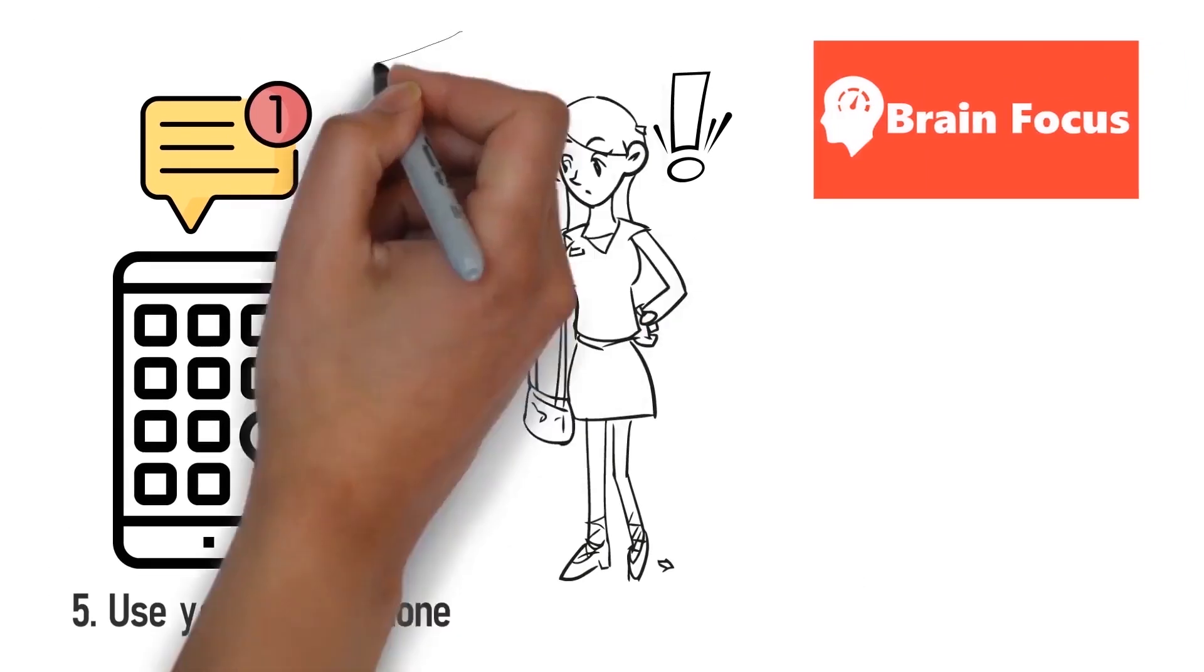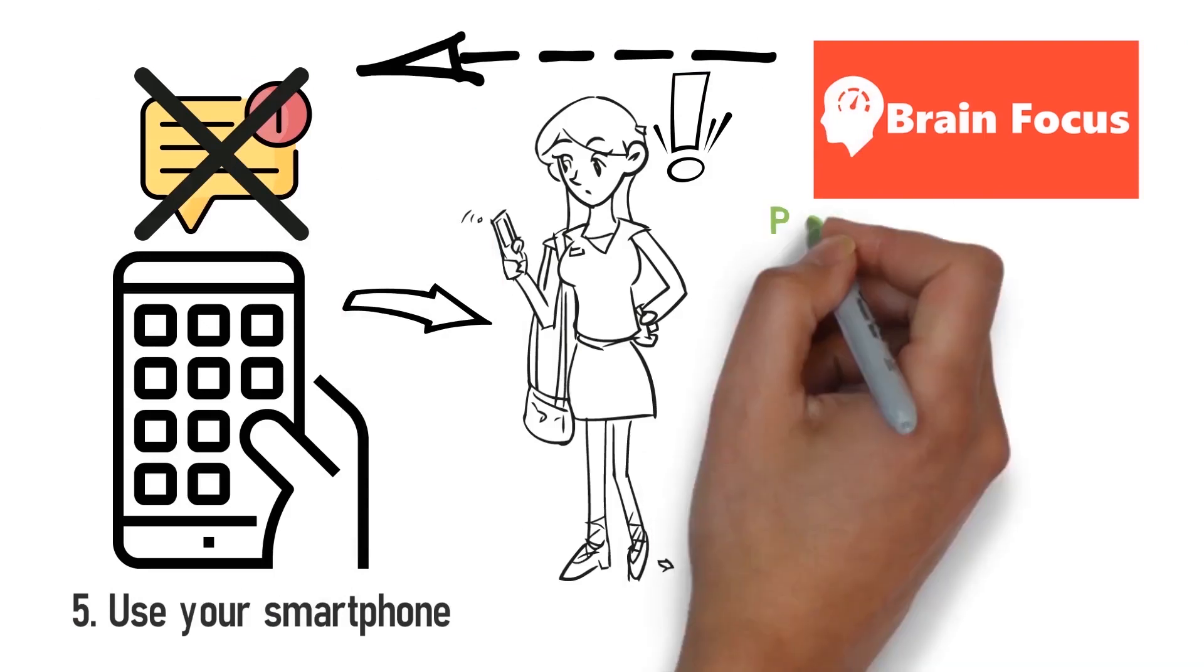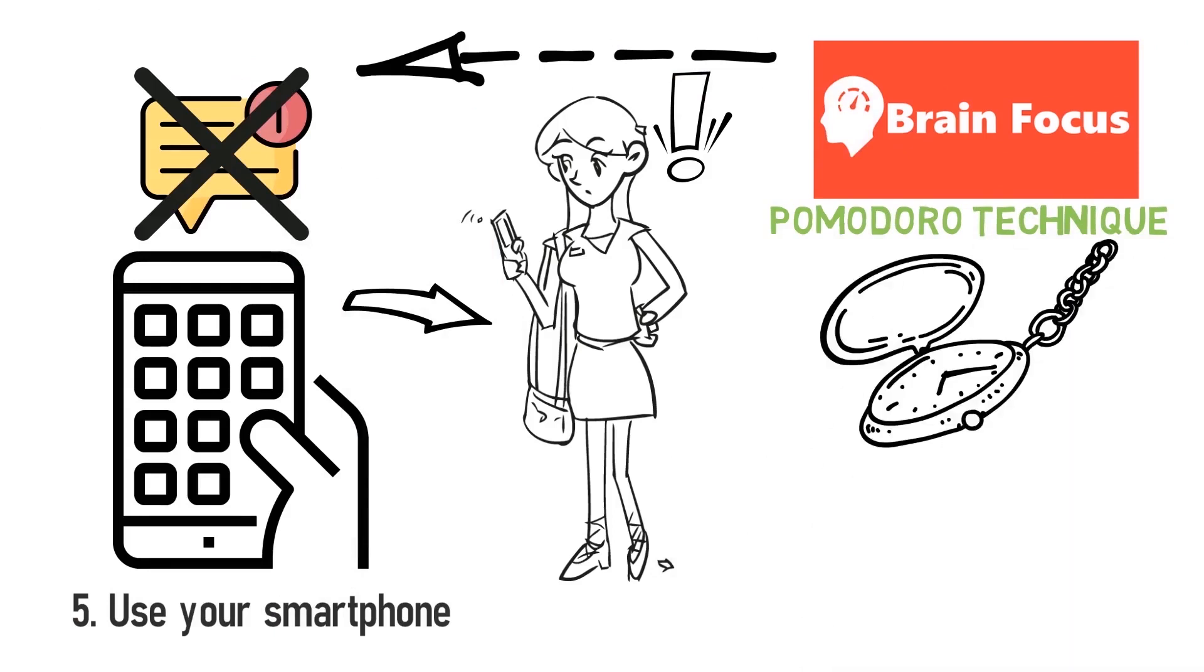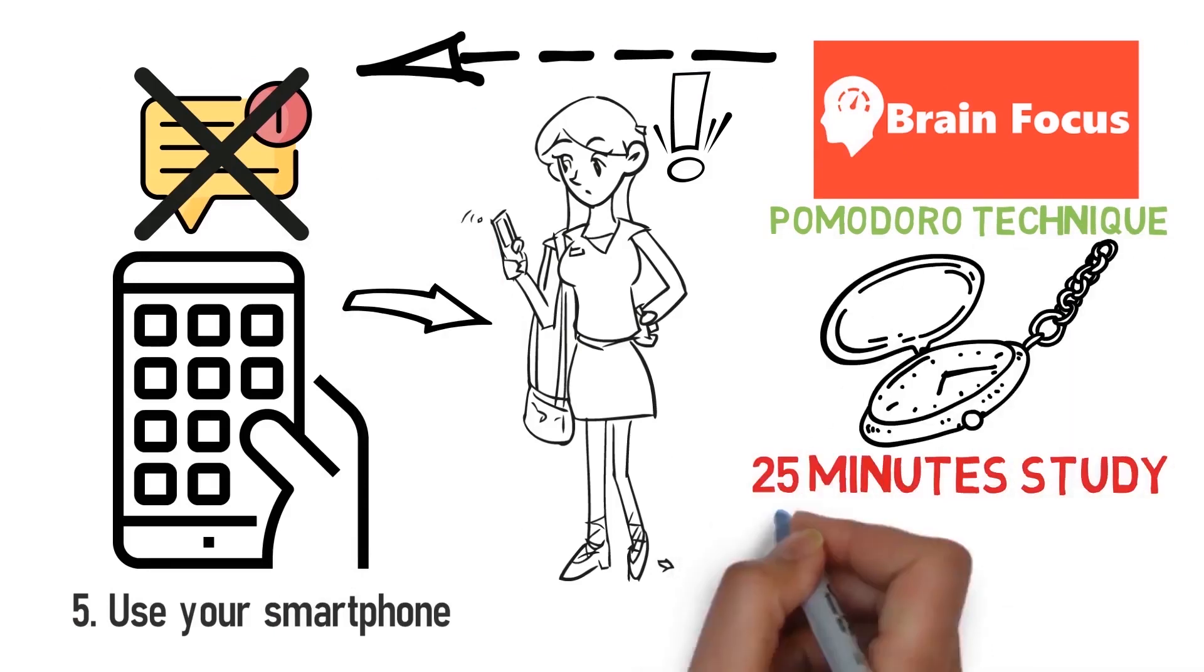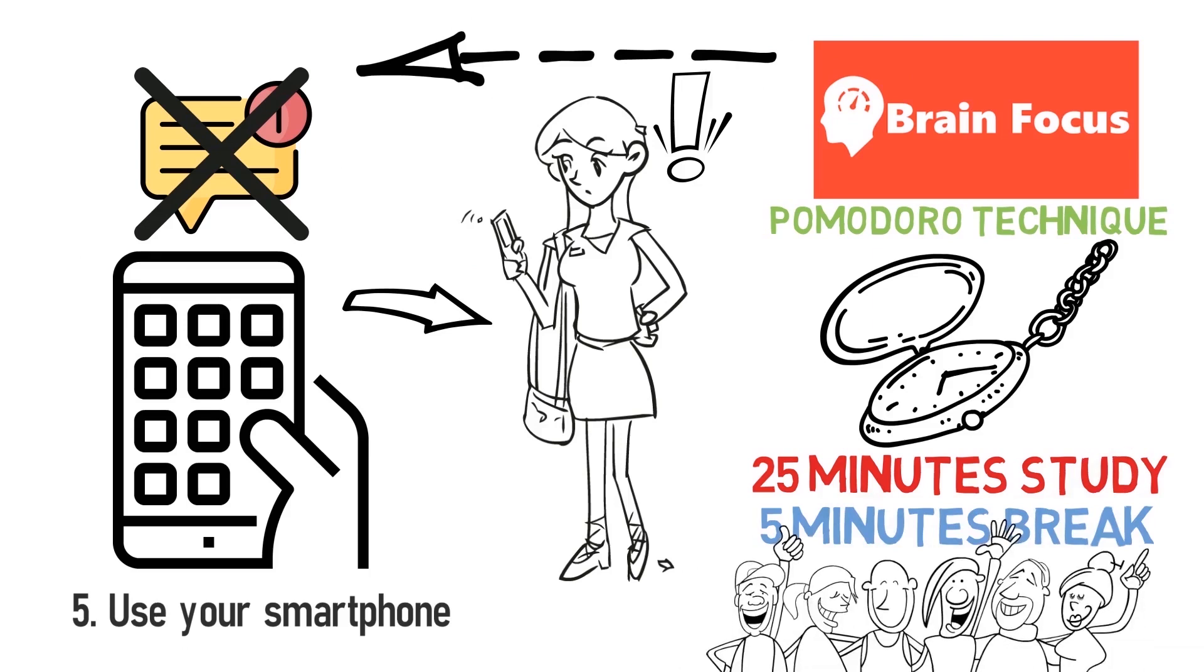That is why we want to use our phones in a different way. I recommend using Brain Focus. This app will disable all notifications and uses the Pomodoro Technique. This way, you will have a timer of 25 minutes in which you will study, then a break of 5 minutes, and then on to the next section of 25 minutes. A lot of people love the Pomodoro Technique, and for good reason. I use it myself for making these videos. So try it out and see if it works for you.